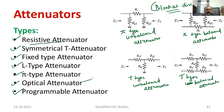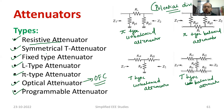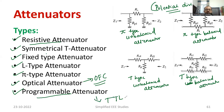Optical attenuators are quite commonly used in OFC — optical fiber cable — communication, such as telephone cables. Programmable type attenuators are also available in the market, and they mainly work based on TTL logic — transistor-transistor logic.